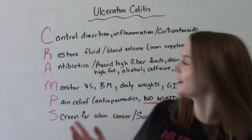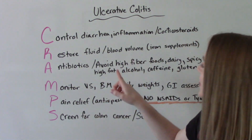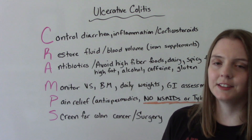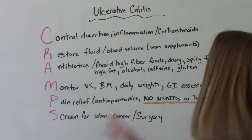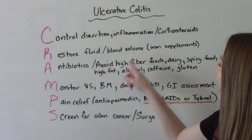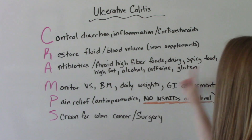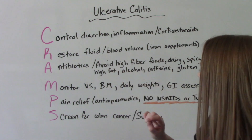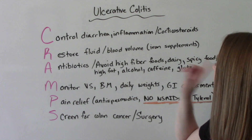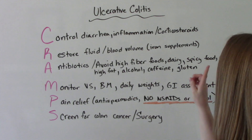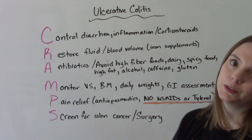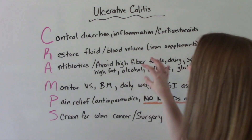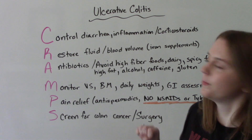A is for antibiotics, and also for avoiding many things in the diet. So avoiding high-fiber foods, dairy, spicy foods, high-fat foods, alcohol, caffeine, and gluten — because those will just trigger the condition and make it worse.